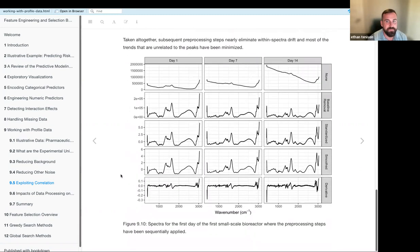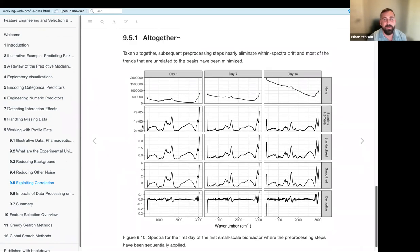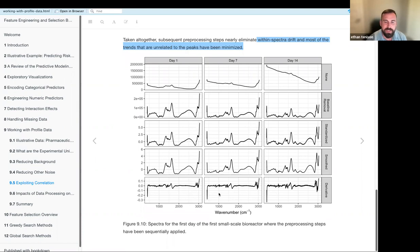But you still need about, you know, almost 200 lags to get rid of that correlation. Whereas when you take the first order derivative, it declines more precipitously. And then so all together with all these steps, you could almost entirely eliminate the within spectra drift from the baseline, while also keeping those vital peaks which contain the predictive information. So we've got day one, day seven, day 14, of measurements that were taken. Here you have zero pre-processing. Here you have removing the baseline, standardization, smoothing, and then finally taking the first order derivative. And you have this really nice time series. Well, it looks like it's time series. It's not, it's the wave number.